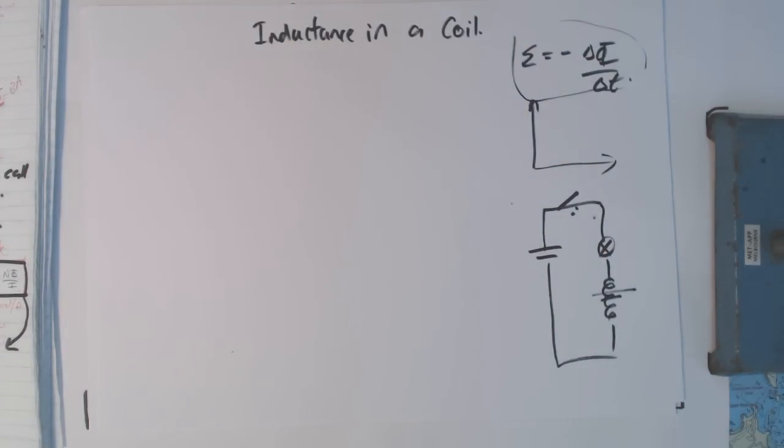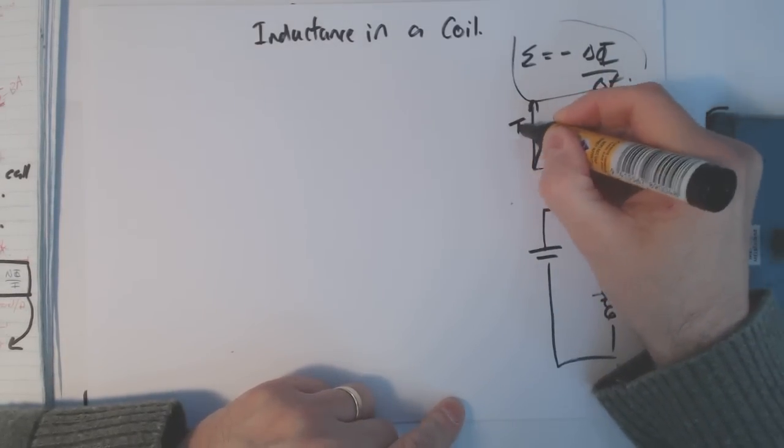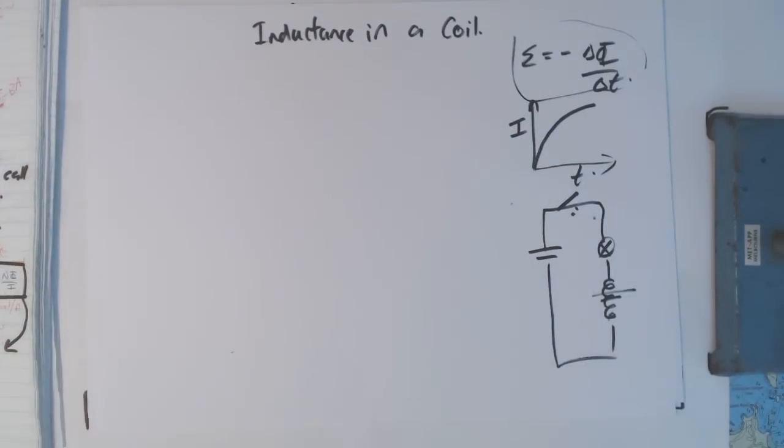So the current can't build up quickly, and you end up with a current-time graph like this. We'll look at the time constant in another video. Remember, this is opposite to the capacitor—with a capacitor, voltage against time is slow to build up. With an inductor, it's the current against time that's slow to build up.